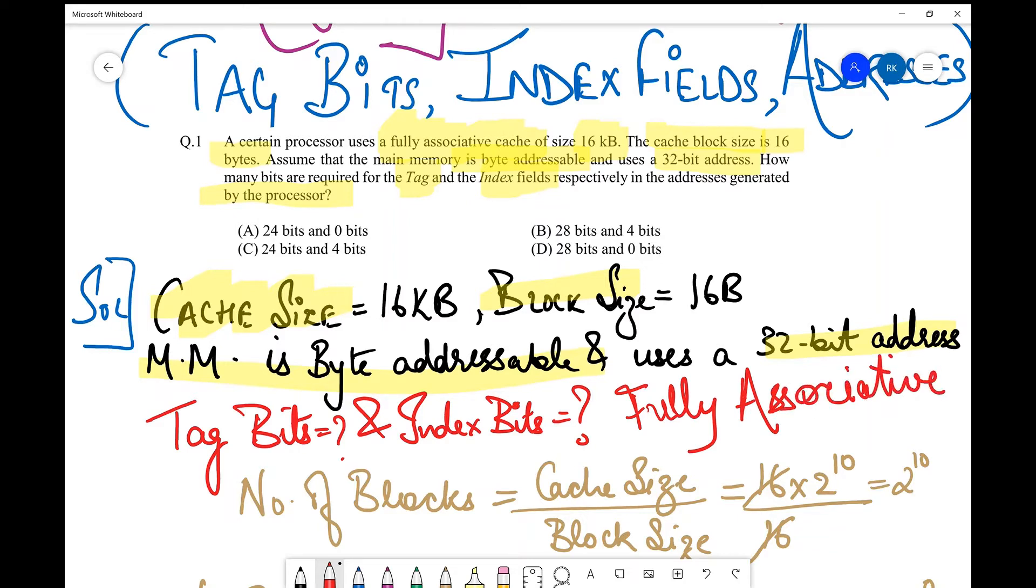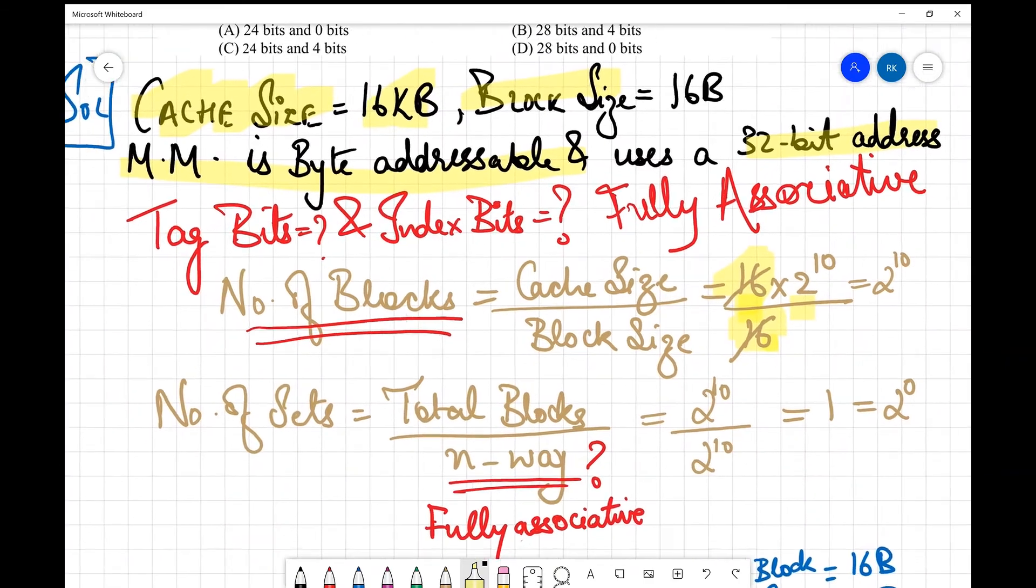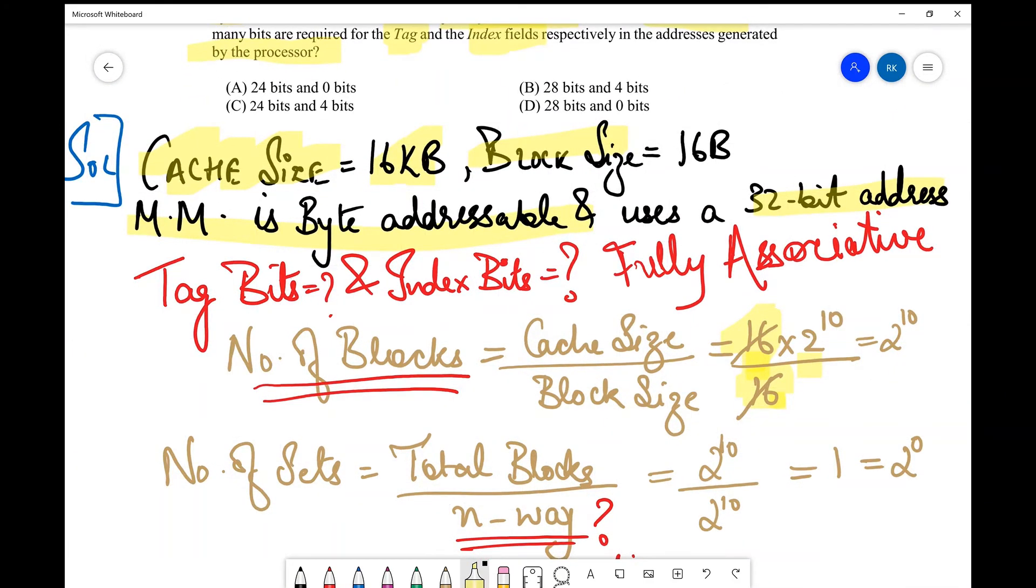Okay, now the next important thing that we need to find is the number of blocks in the cache, which equals cache size divided by block size. Therefore, the cache size is 16 KB, so 16 times 2 to the power 10 in terms of memory. Similarly, block size is 16 bytes, so 16 over here. 16 and 16 get cancelled and we get the number of blocks as 2 to the power 10.